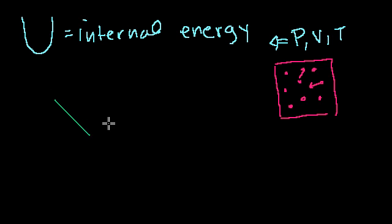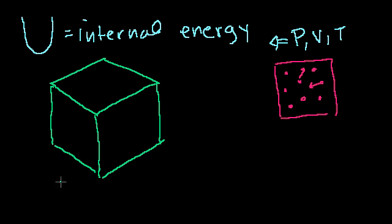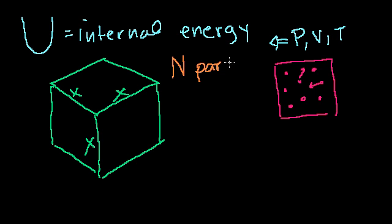Let me just draw it. I have a cube, and something tells me I might have already done this pseudo-proof in the physics playlist. So let's say my system is this cube, and the dimensions of the cube are x in every direction — x high, x wide, and x deep. So its volume is x cubed. And let's say I have N particles in my system — capital N particles.